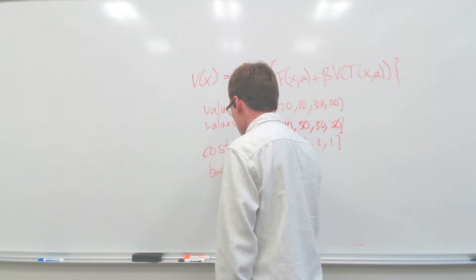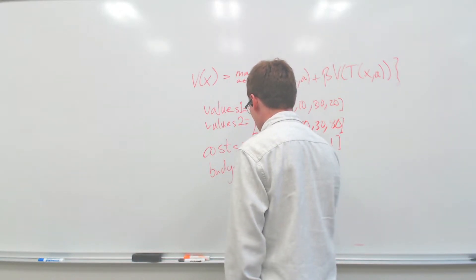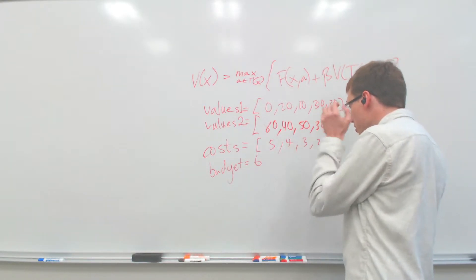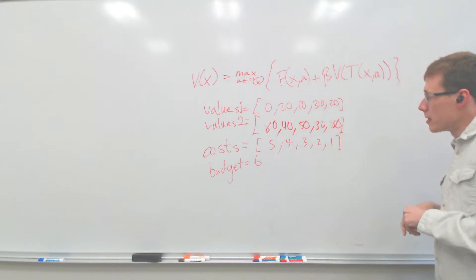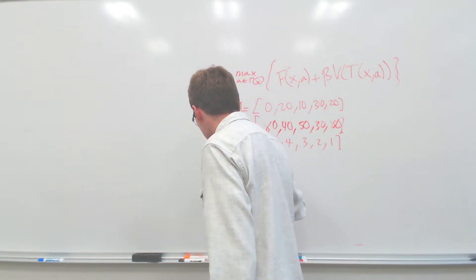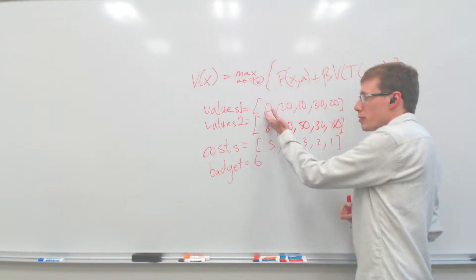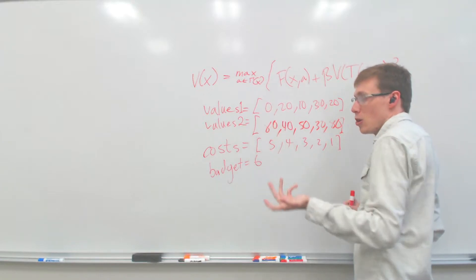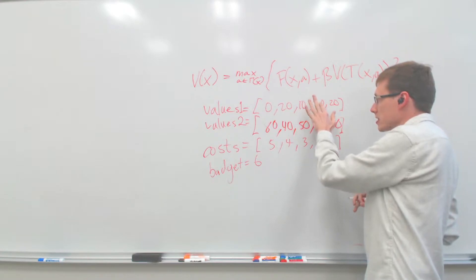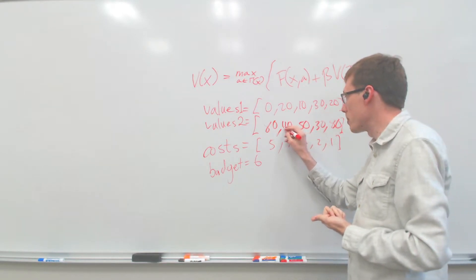With 6 budget to allocate, you can do various combinations of these projects. But the idea is that these are uncertain projects — although you can fund them, you don't know how much they'll actually pay off. For example, there's a 50% chance one pays off zero or 80 — it could be a lot or a little. Another is more certain, essentially a guaranteed third. This is the uncertainty in how much these things will pay off if you fund them.